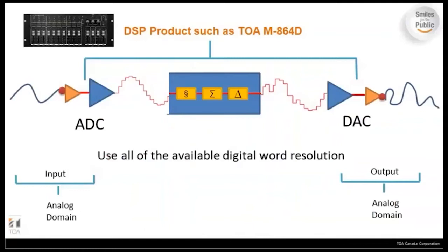Going through that chain: we've got a microphone or music source going into the system in the conventional analog domain, through an analog-to-digital converter, into your DSP — which we'll get into for all its functions and features — and then on the output it goes back into the analog side of things.